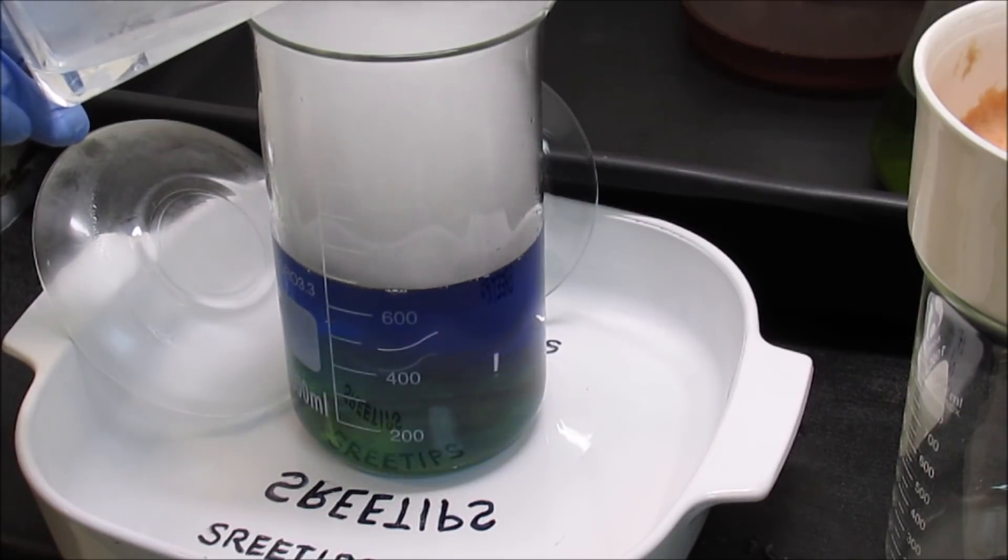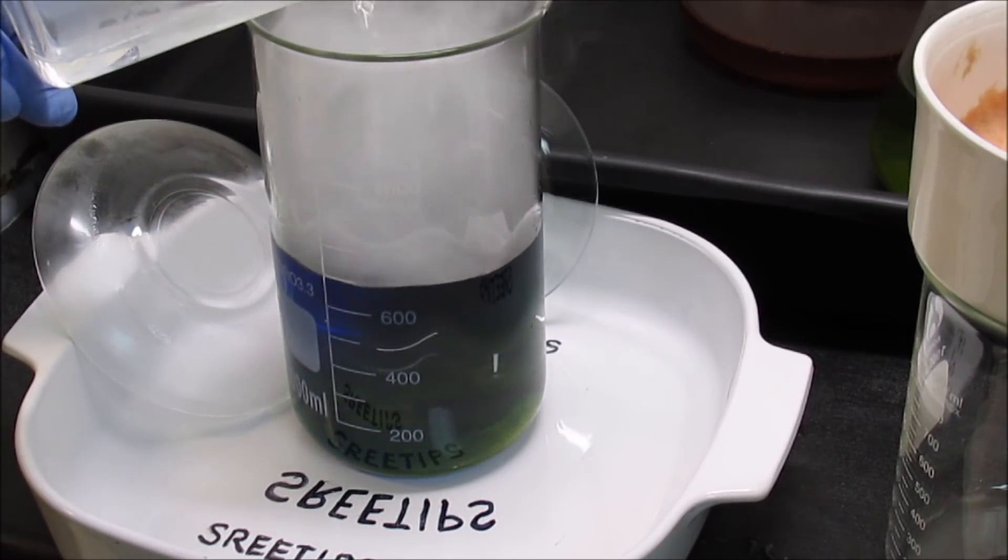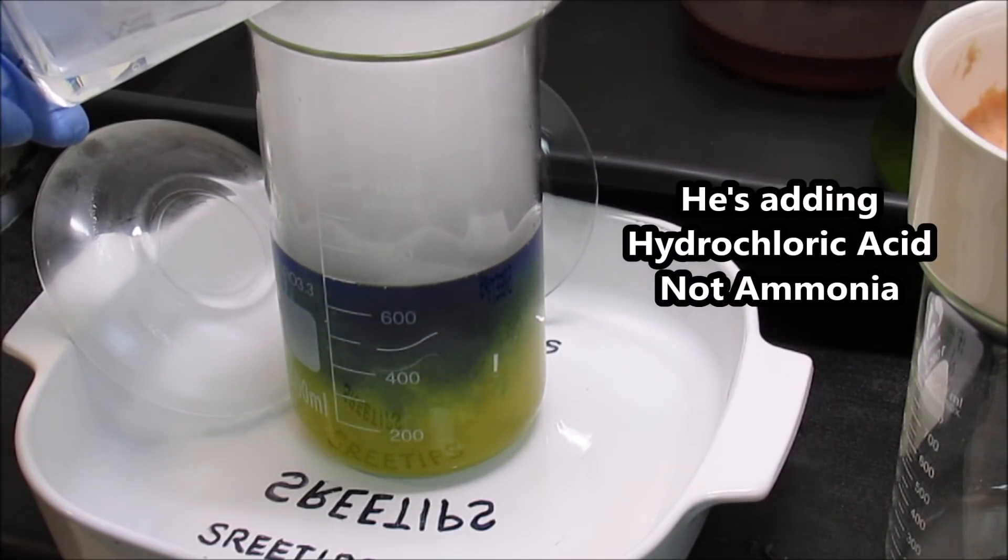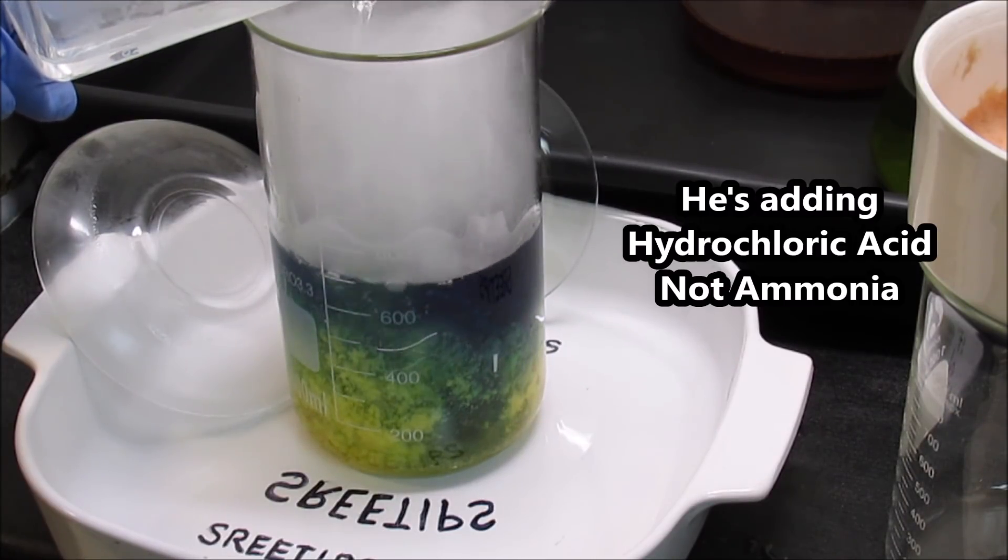Okay, I can see the yellow precipitate forming. There it goes. I'll keep adding ammonia and we should get some real bright, fluffy palladium salt. It's just beautiful.